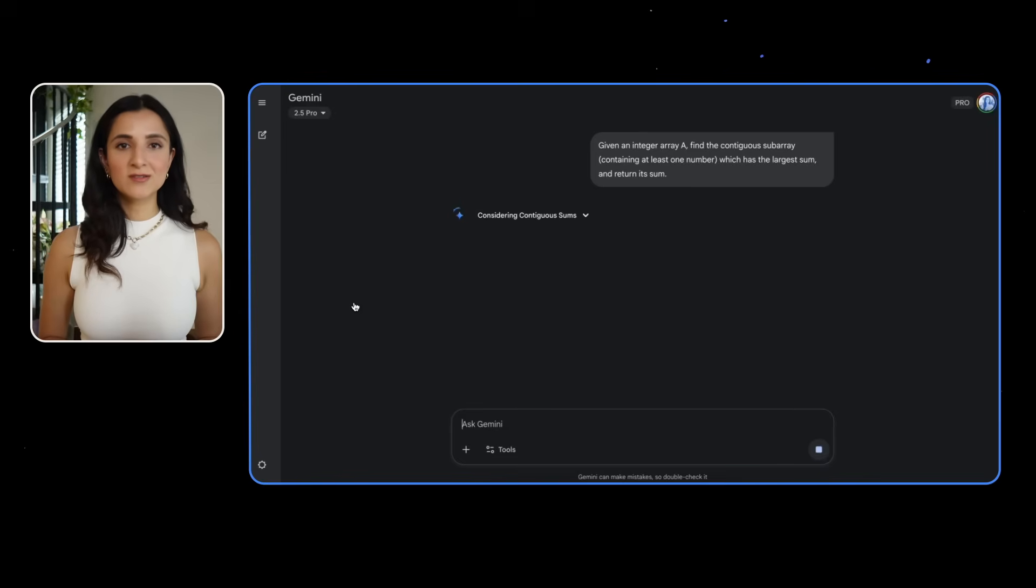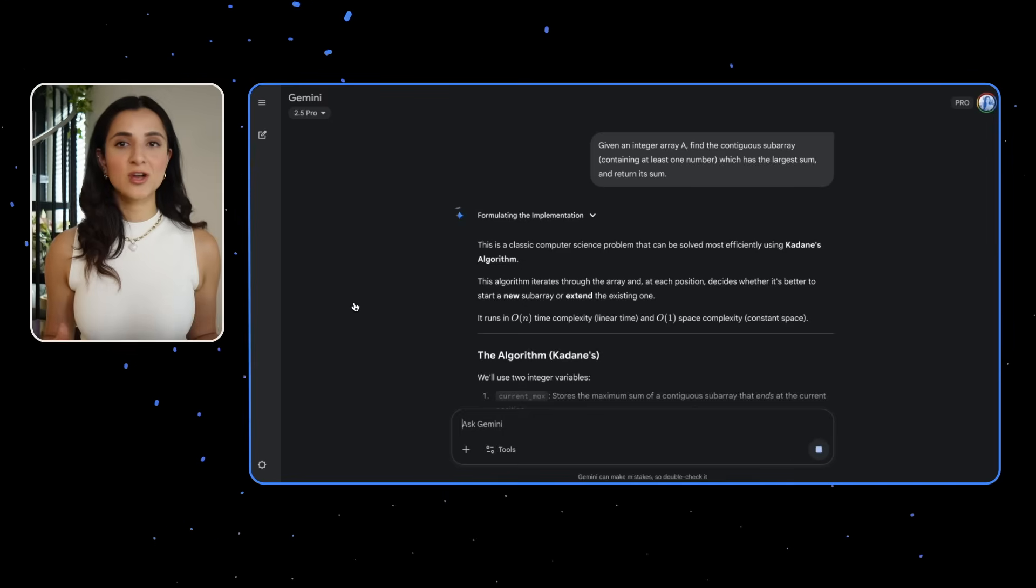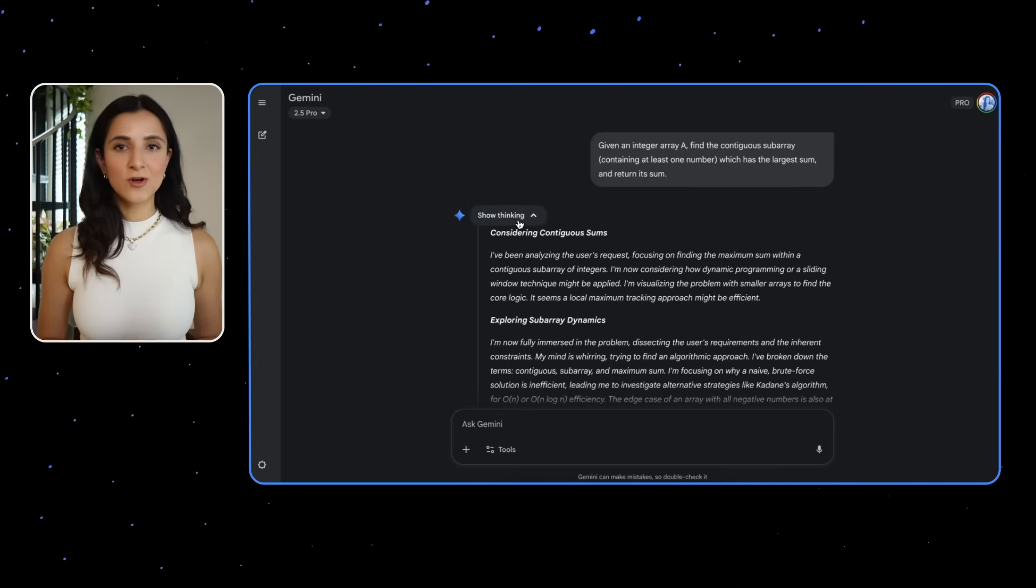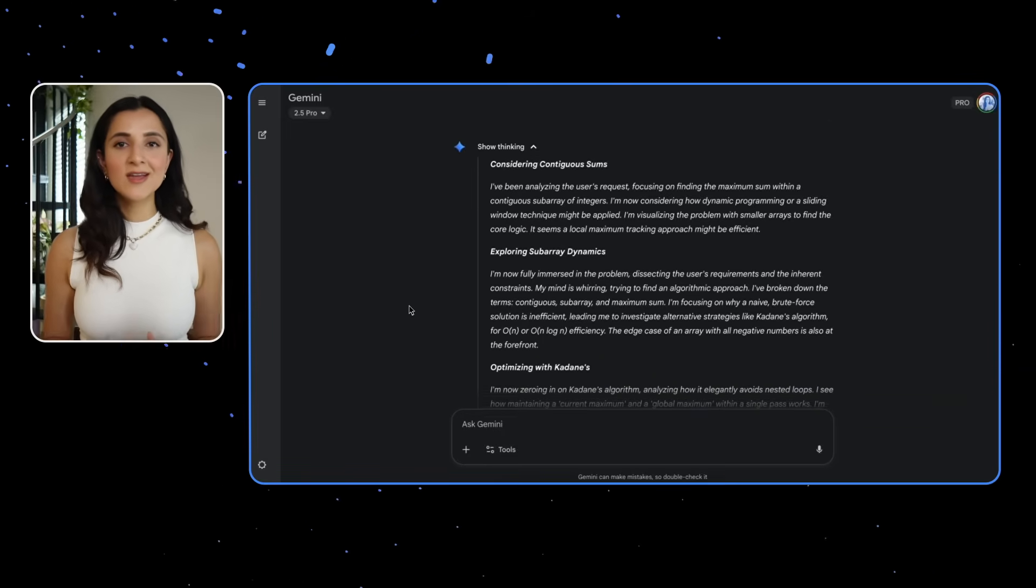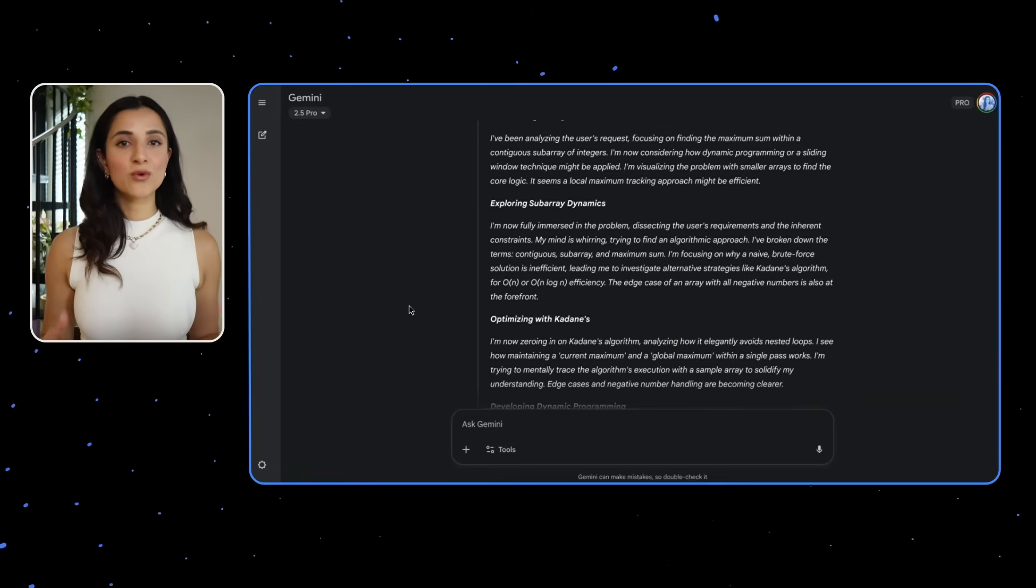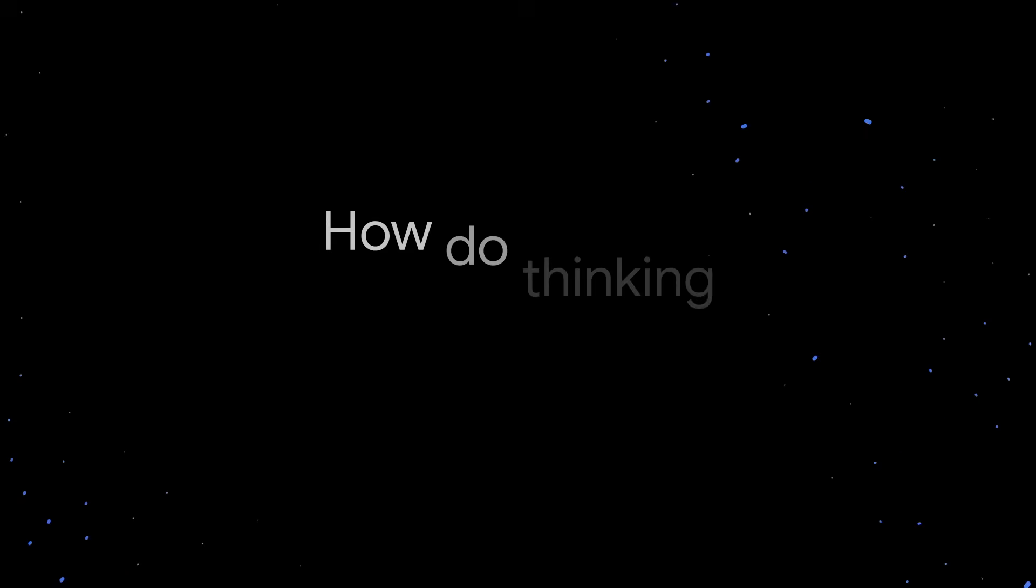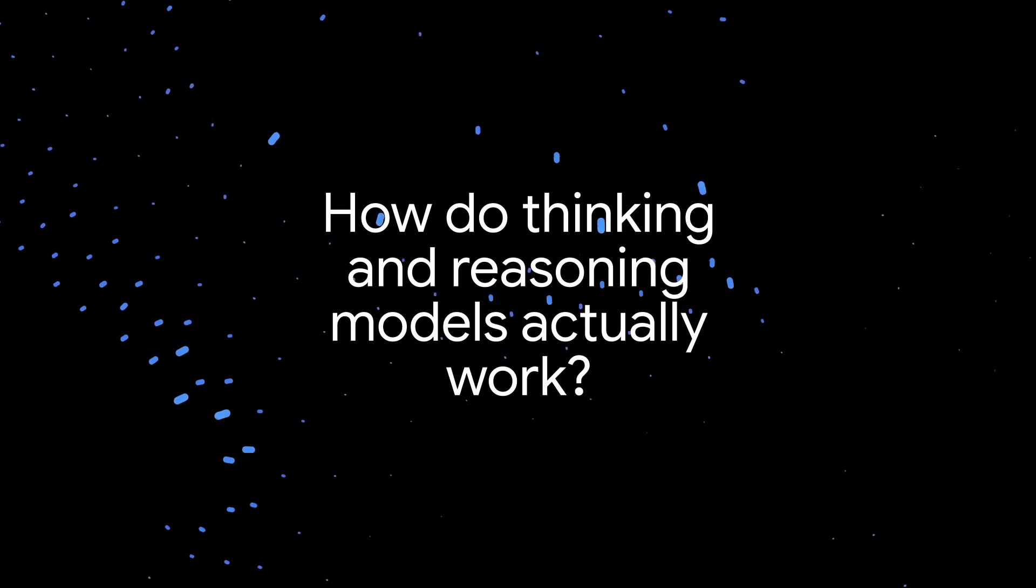In addition to the model response, when you use one of the Gemini thinking models, you'll see a short summary of the contents of the thinking trace, which is intended to help you follow the model's reasoning path. And while this thought summary can offer insights into the model's internal reasoning process, it still doesn't explain our primary question. How do thinking and reasoning models actually work?